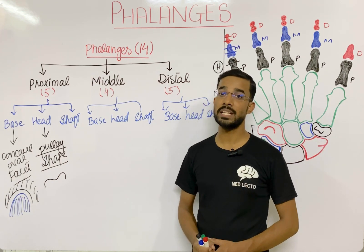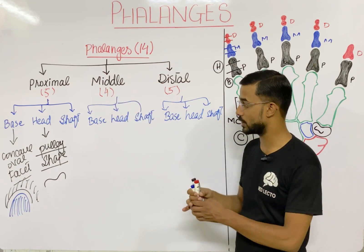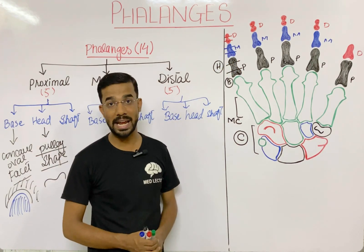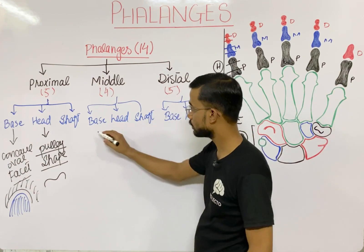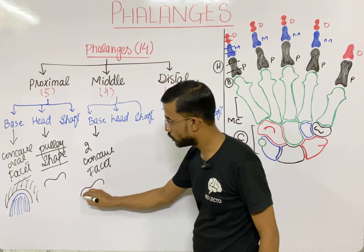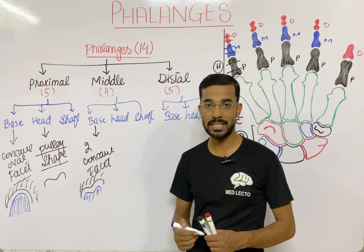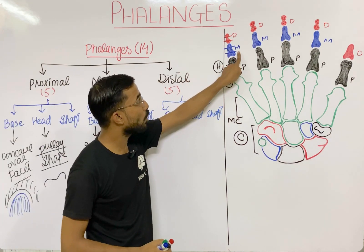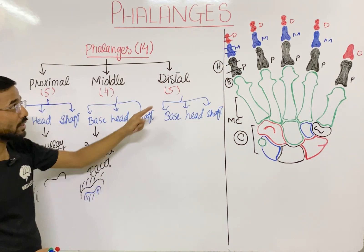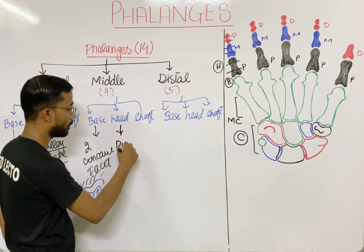Next is the middle phalanges. The base of the middle phalanges has two concave facets — a double cave-like structure — in which the proximal phalanges will articulate. The head of the middle phalanges is again pulley shaped, which is common in all of them.